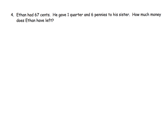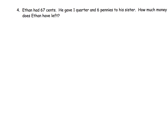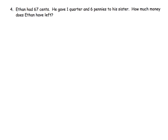Ethan had 67 cents. He gave one quarter and six pennies to his sister. How much money does Ethan have left? So the first thing we have to do is figure out how much money is one quarter plus six pennies, and we're going to get 31 cents — either by counting or by grouping five of these pennies together to make 30. Either way, we're going to get 31 cents.